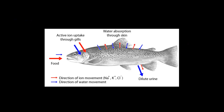Moving on, we're going to start off with the freshwater fish. This is a freshwater fish, and I'm going to tell you some characteristics that you can use to identify it as a freshwater fish. Starting off, water is actually absorbed through the skin — I'm assuming this is because of diffusion — and because of this, these fish have dilute urine.